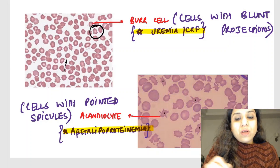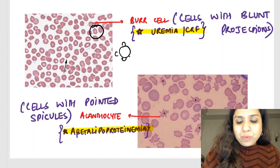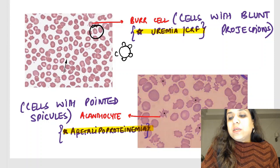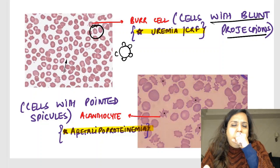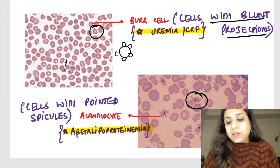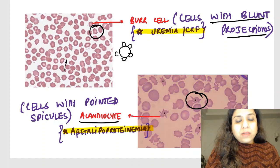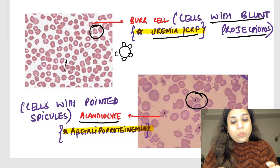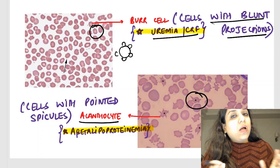In this image, can you see these cells? The RBC has got blunt projections — that is called a burr cell. In contrast, here the RBC has got pointed projections — that is called an acanthocyte. Burr cells are seen in uremia or chronic renal failure, whereas acanthocytes are a characteristic feature of abetalipoproteinemia. These are one-liners which are usually asked.